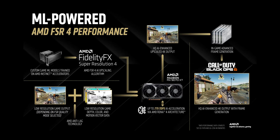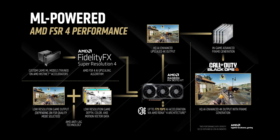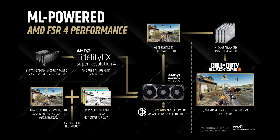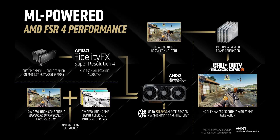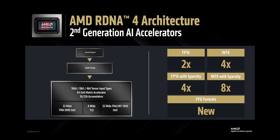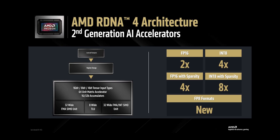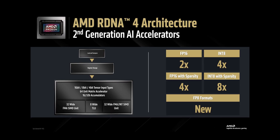So AMD reacted. They started building FSR 4, and for the first time they said this won't be a pure software solution. FSR 4 uses machine learning — real AI. It requires dedicated AI cores, something AMD included in the RX 7000 and RX 9000 series GPUs. But there's a catch. Even though RX 7000 has AI cores, they're slow, and FSR 4 isn't just any ML model — it's built for FP8 precision. And RX 7000 doesn't support FP8.